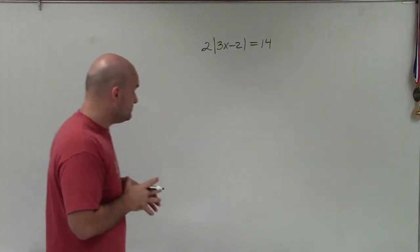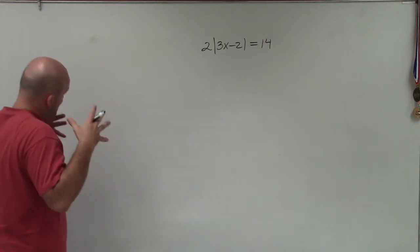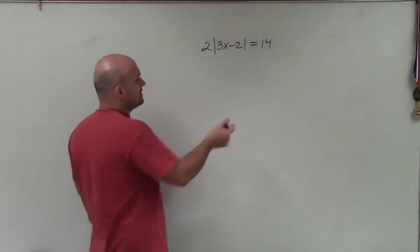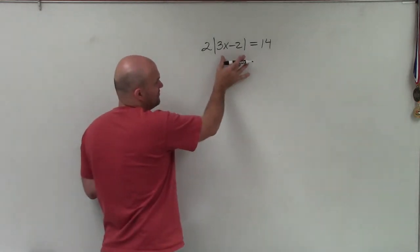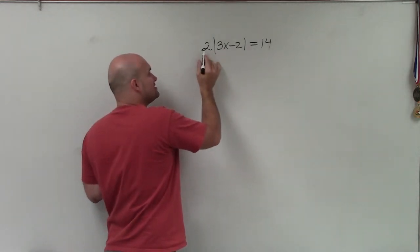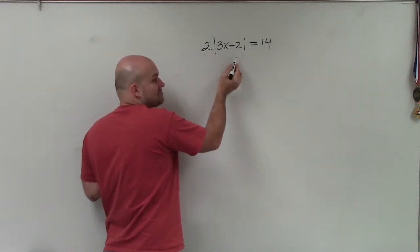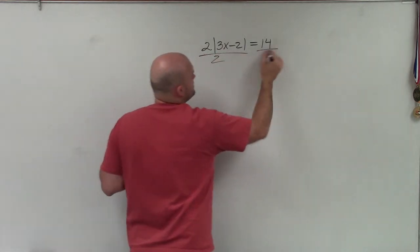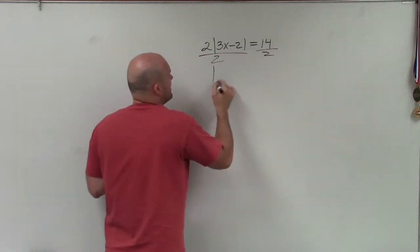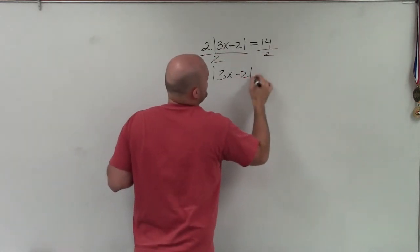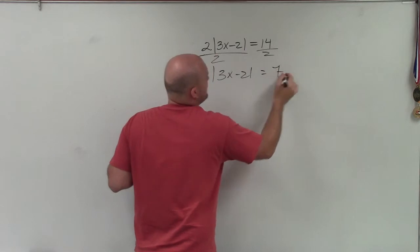To do that, we've got to make sure we isolate our absolute value first. Think of this as two times absolute value — so I'm going to divide by two. And now I have the absolute value of 3x minus 2 is equal to 7.